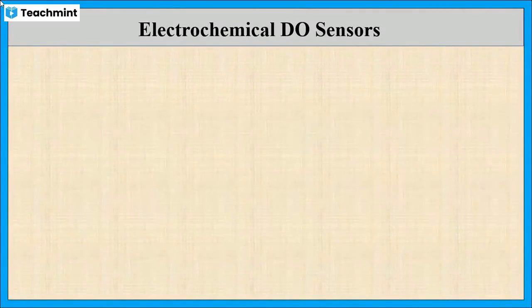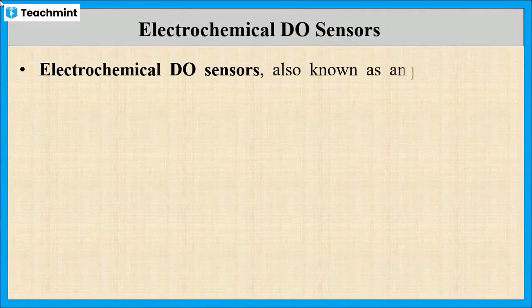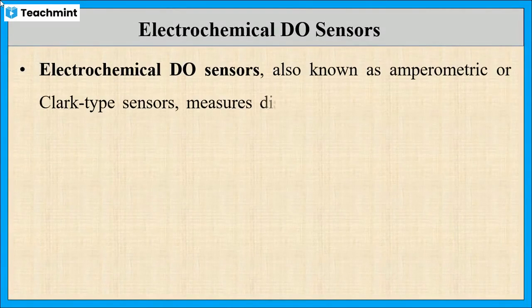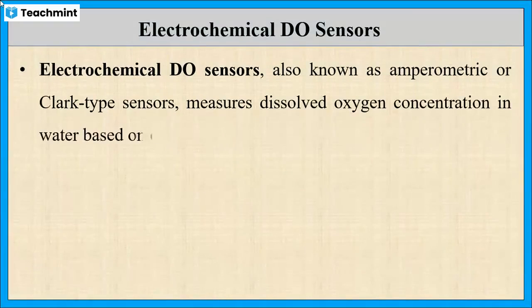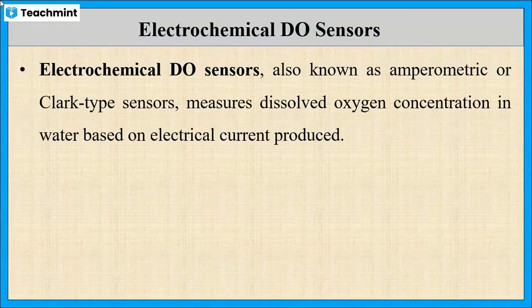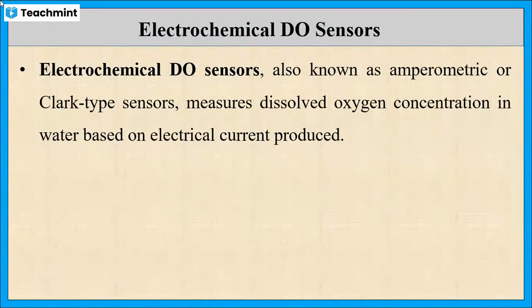Electrochemical dissolved oxygen sensors, or amperometric sensors, or Clark type sensors are used to measure the dissolved oxygen in water based on the electrical current produced.